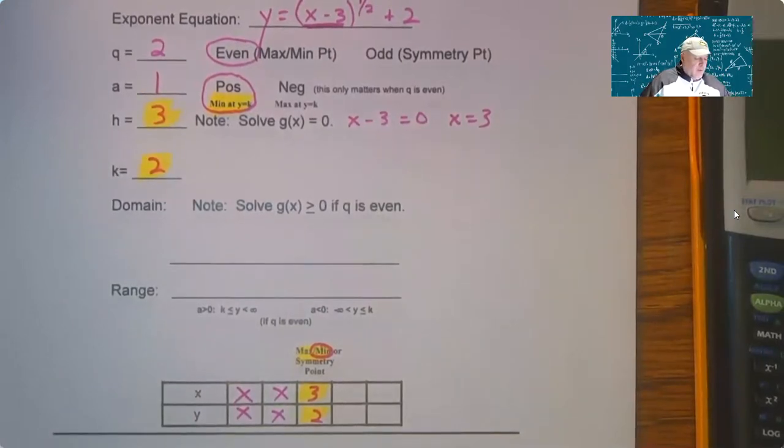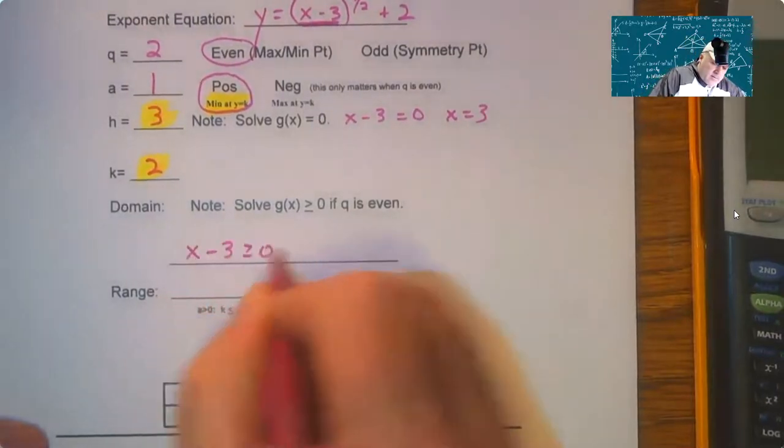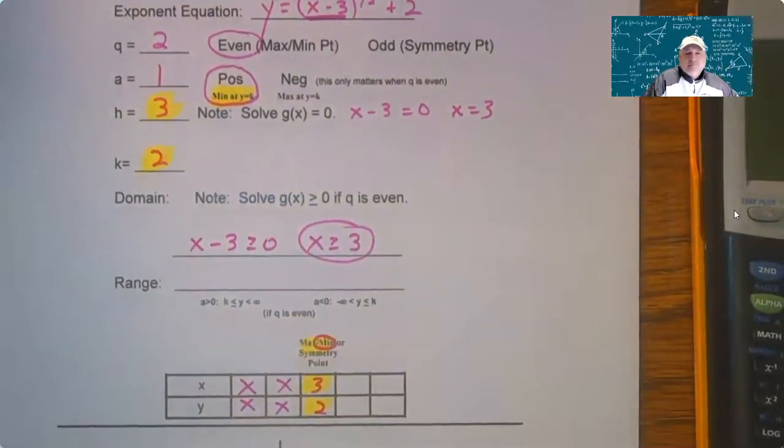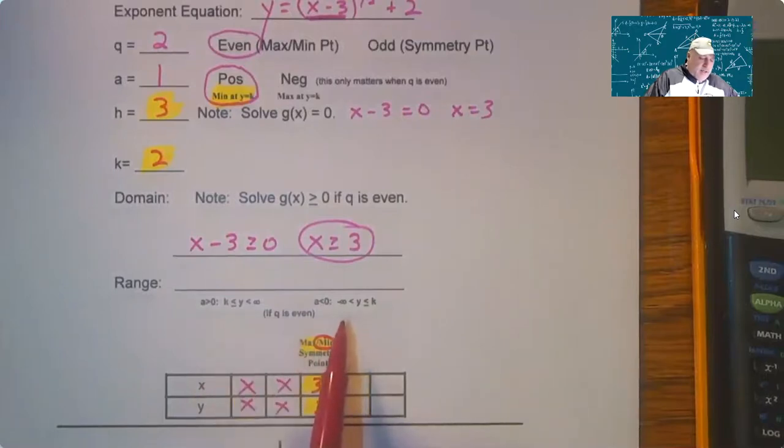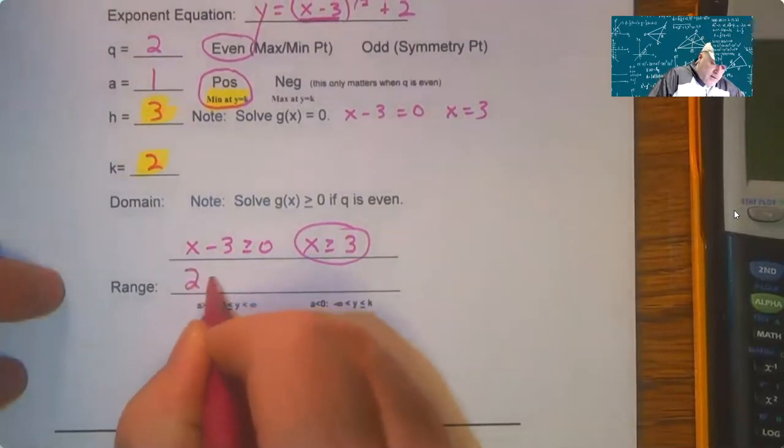Since Q is even, we've got to figure this out. If Q is odd, if it was a cube root, the domain would be all reals, the range would be all reals, there'd be no restriction. So we have to solve the g(x) greater than or equal to 0. This is how we get the domain. And then the range, we just pick one depending upon A. Well, A was greater than 0, so here it is. So we take the K value less than or equal to Y.